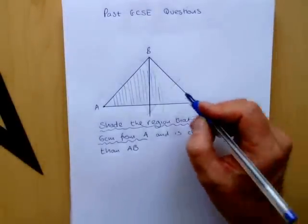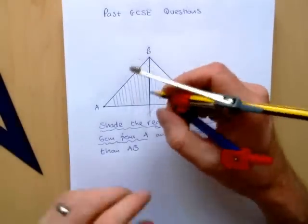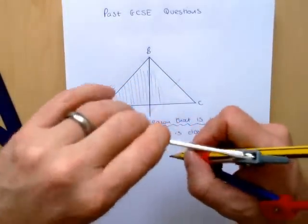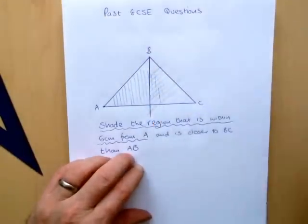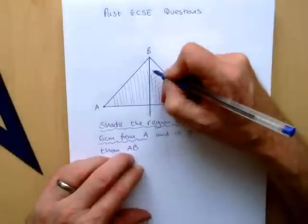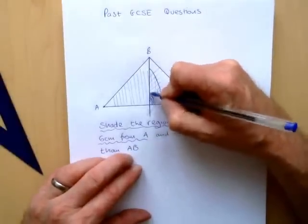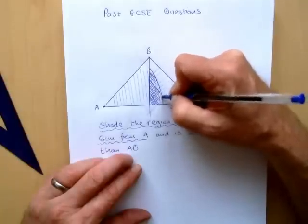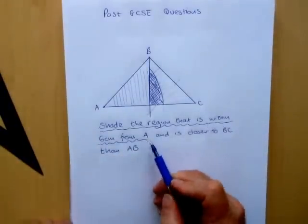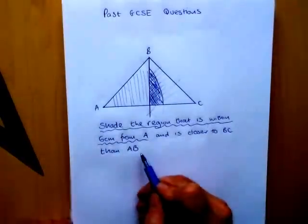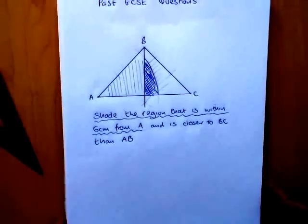Now I want to be closer to BC, so I'll shade in a different direction — with a pencil this time. Where the two shaded areas cross, both conditions are satisfied. The area you can see me shading now is the region that's within 6 cm from A and closer to BC than AB. That will give you four marks on the GCSE exam.